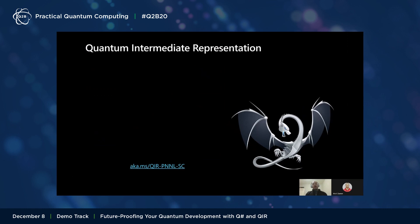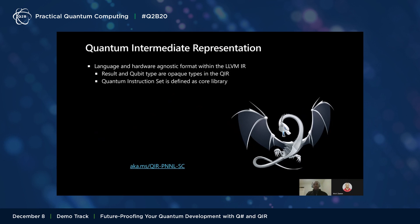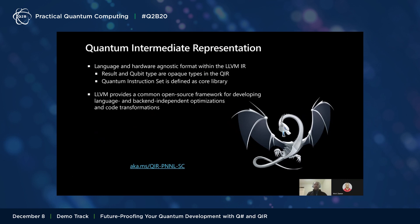QIR defines how to represent quantum programs within the LLVM IR without requiring extensions or modifications of LLVM — the quantum-specific elements are defined using existing LLVM constructs. Further, QIR is not specific to Q#; any programming language for gate-based quantum computing can be compiled into QIR. Similarly, QIR is hardware agnostic — it does not require a particular quantum instruction or gate set, but instead leaves it up to the target environment to define that. Thus, QIR represents the foundation for developing optimization passes and code transformations shared across different languages and backends, including existing LLVM passes or new quantum-aware passes that consider the gates and qubits being used.